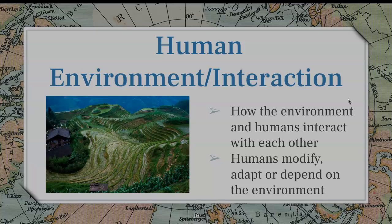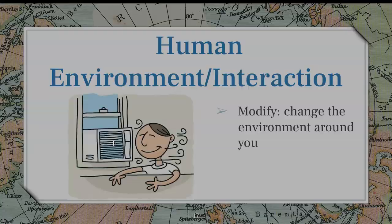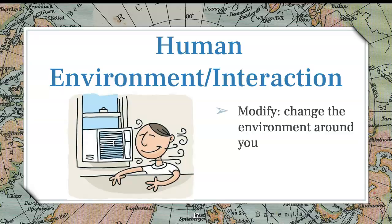Human environment interaction is how the environment and humans interact with each other. Humans can either modify, adapt, or depend on an environment. In the picture, you see rice paddies from China, which shows how humans adapted, modified, and depended on the environment. To modify is to change the environment around you. Think of when you get too hot or too cold — if you're too hot, you turn on the air conditioner; if you're too cold, you turn on the heater. You're modifying the environment around you.